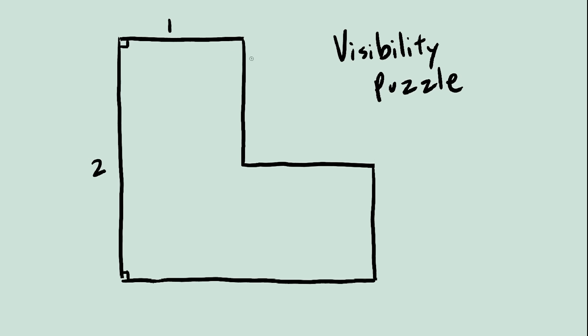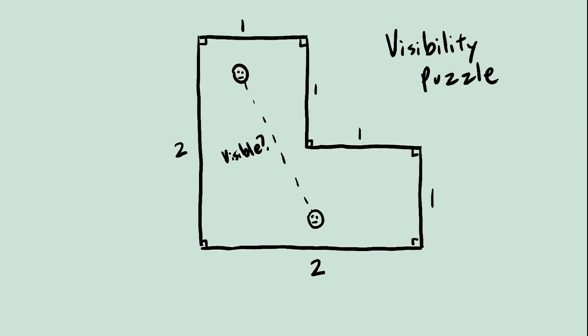Let's say you have an L-shaped room that looks kind of like a decapitated Tetris piece, and you place two people inside at random locations. What is the probability that they can see each other?